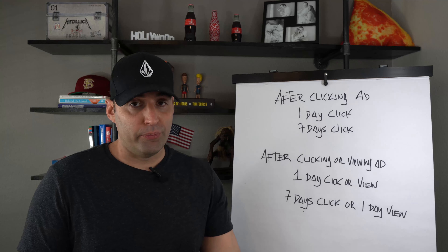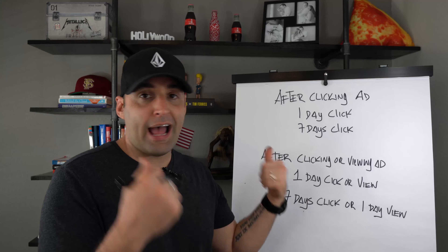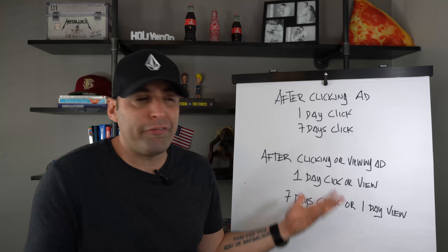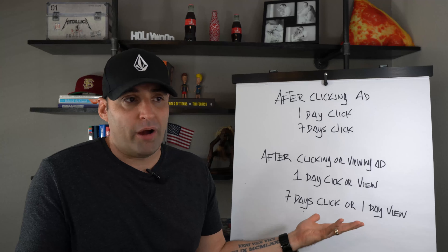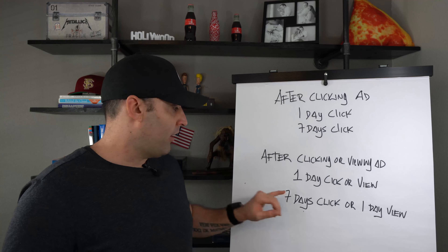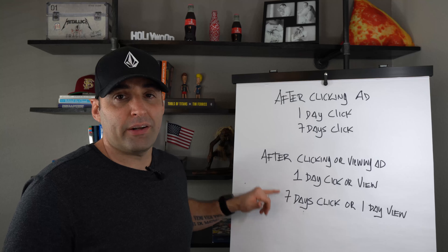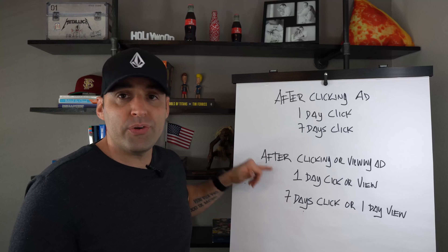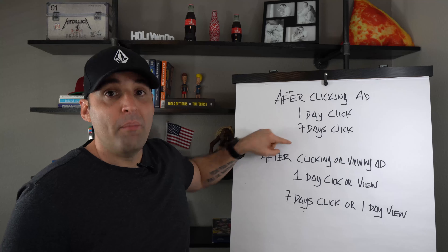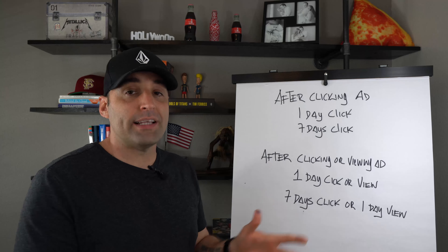So once your audience is proven, you just let that ad set run and run and run as long as you're getting results. Anything with profit, you never kill — why would you kill anything with profit? But the correct thing to do is, once you've done that, duplicate your ad set or duplicate into a brand new campaign and choose seven-day click.